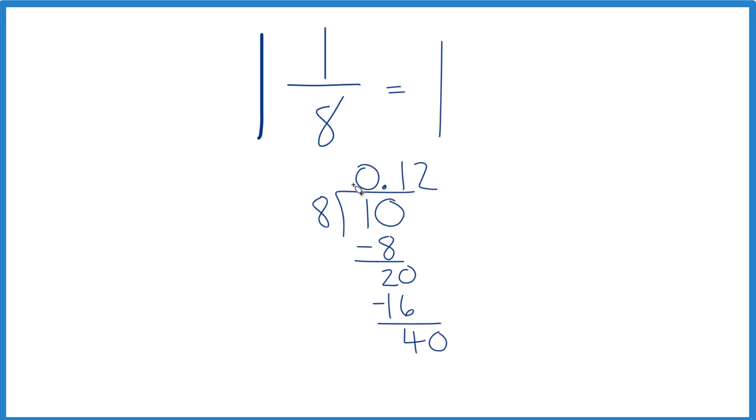Call it 40. We'll move over 1 and 5 times 8. That gives us 40. When we subtract, no remainder.